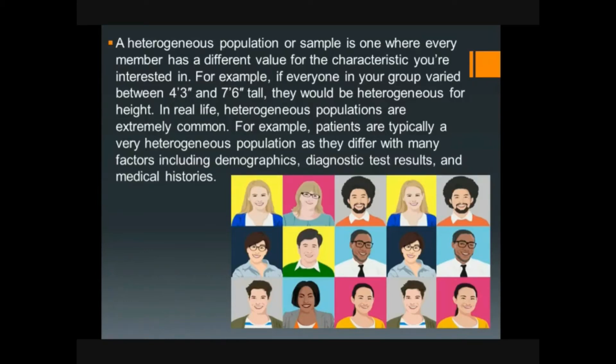A heterogeneous population, for example, is one where every member has a different value for the characteristic you are interested in. For example, if everyone in your group varied between 4'3" and 7'6" tall, they would be heterogeneous for height.